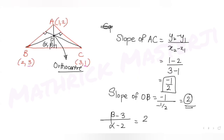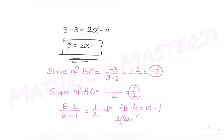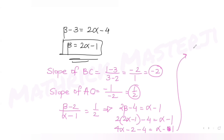Using the slope of OA: (beta - 2)/(alpha - 1) = 1/2. This gives 2 beta - 4 = alpha - 1. Substituting beta = 2 alpha - 1, we get 4 alpha - 2 - 4 = alpha - 1, which simplifies to 3 alpha = 5.